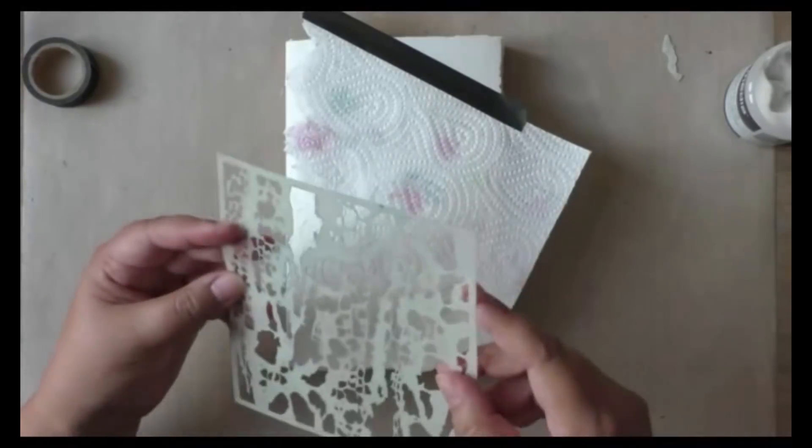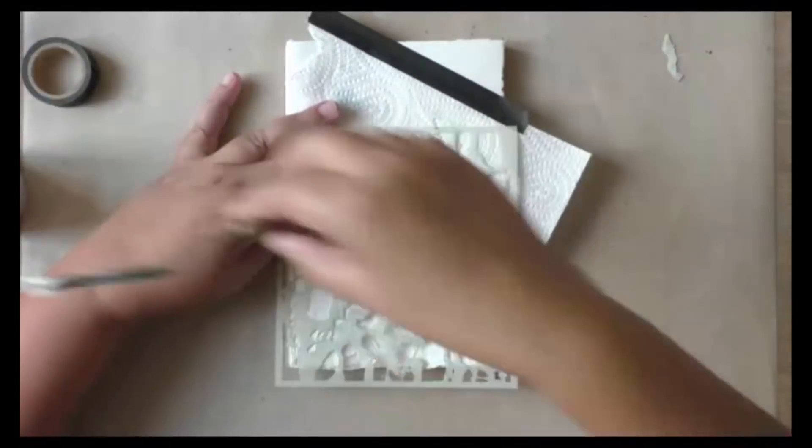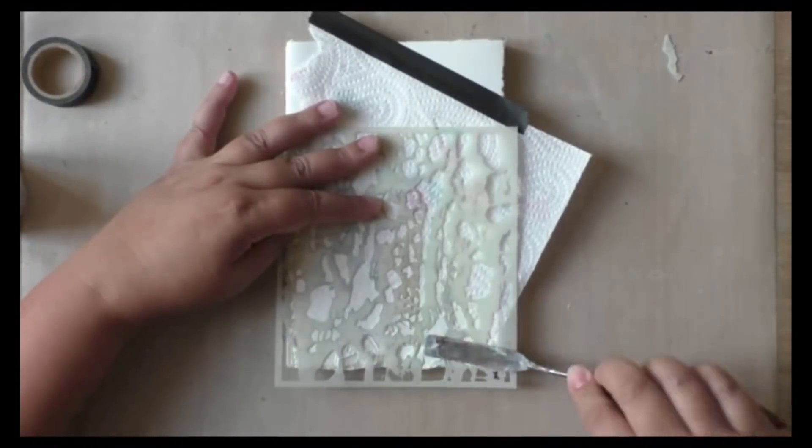Reusing my kitchen roll stencil and now my rock formation stencil, I'm adding a second layer of paste, and this time it's just regular modeling paste.